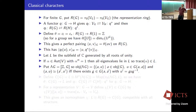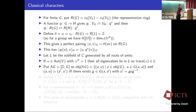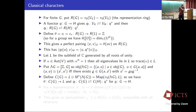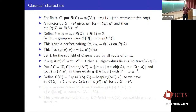Let λG be the groupoid of functors from Z to G. Since Z is a group under addition viewed as a one-object groupoid, functors from Z to G send the single object of Z to some object A in G and the element 1 to some automorphism of A. So objects of λG are pairs (A, U) where U is an automorphism, and a morphism from (A, U) to (A', U') is a morphism G: A → A' in G such that U' = G U G^{-1}. If G is a group, the isomorphism classes in λG are just the conjugacy classes.